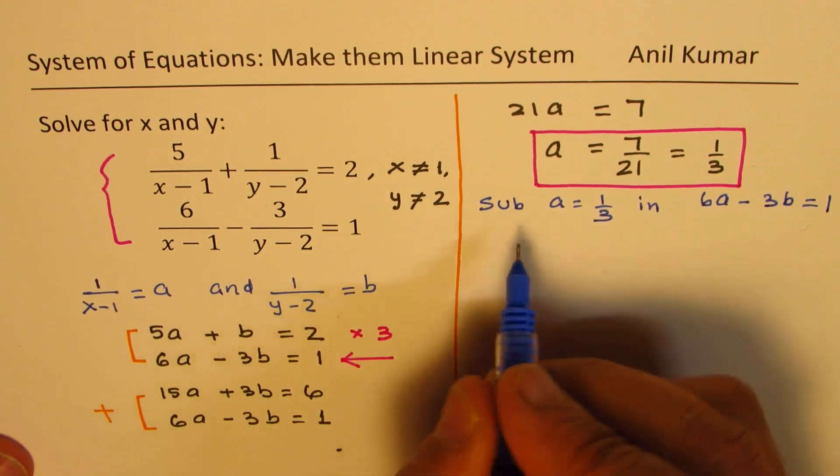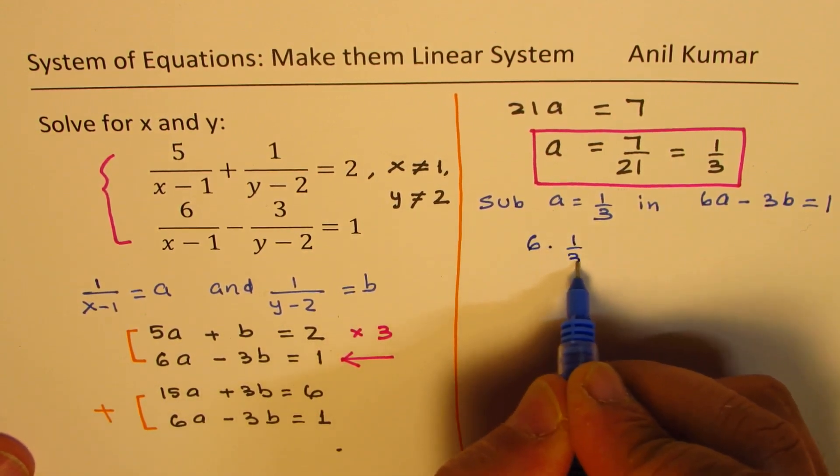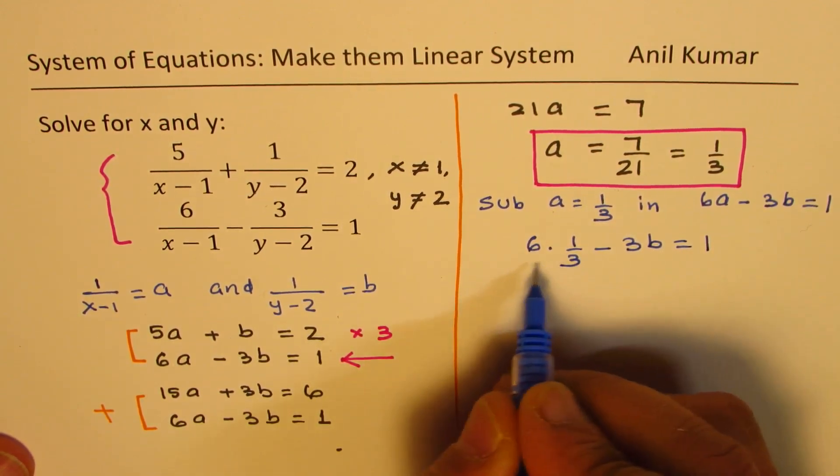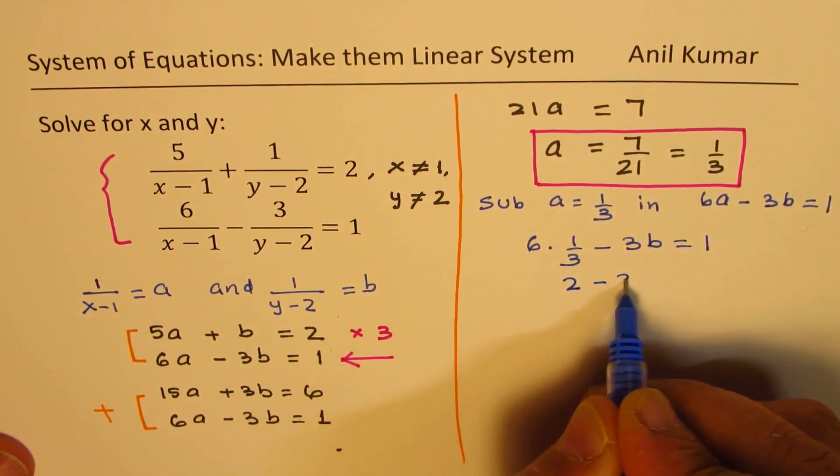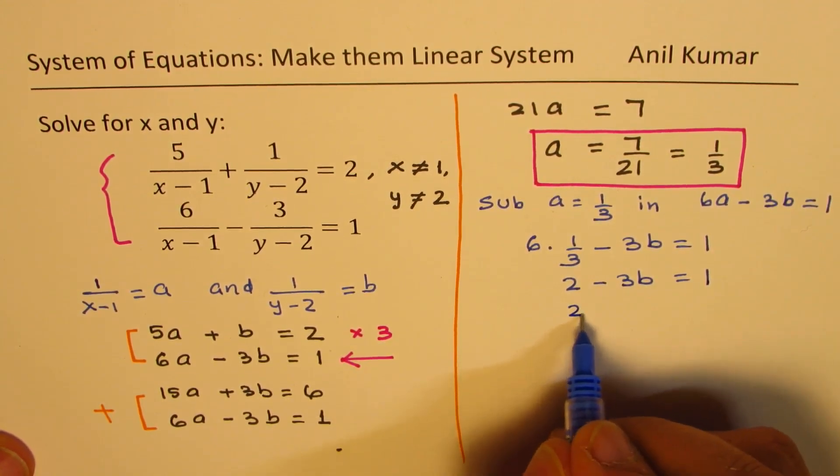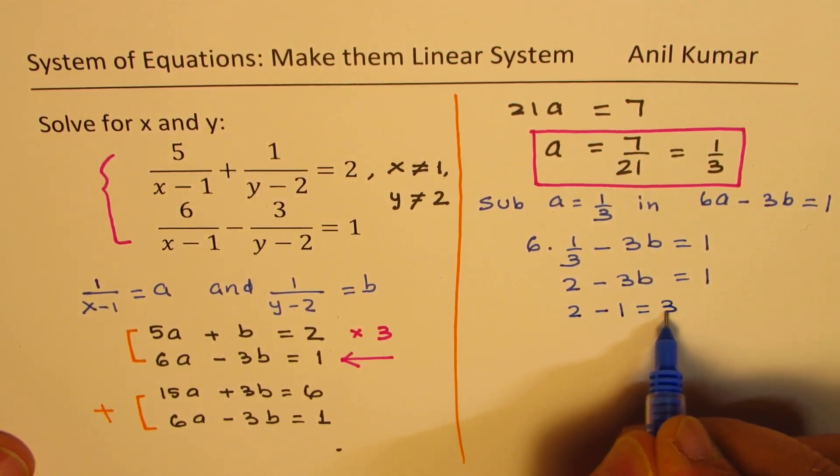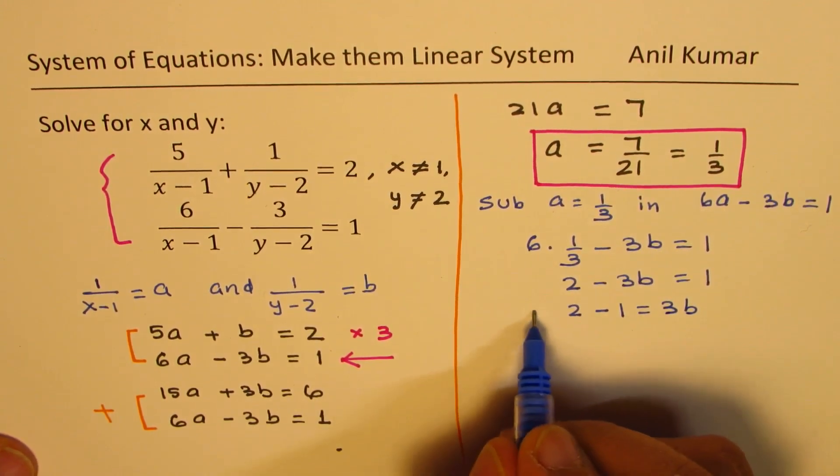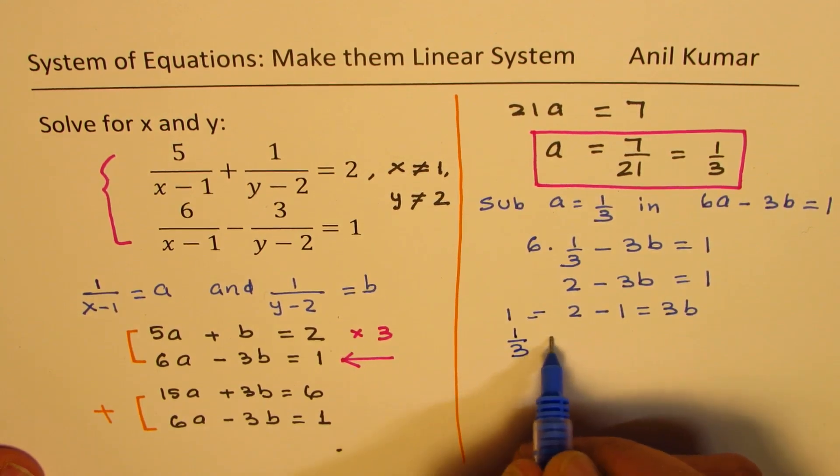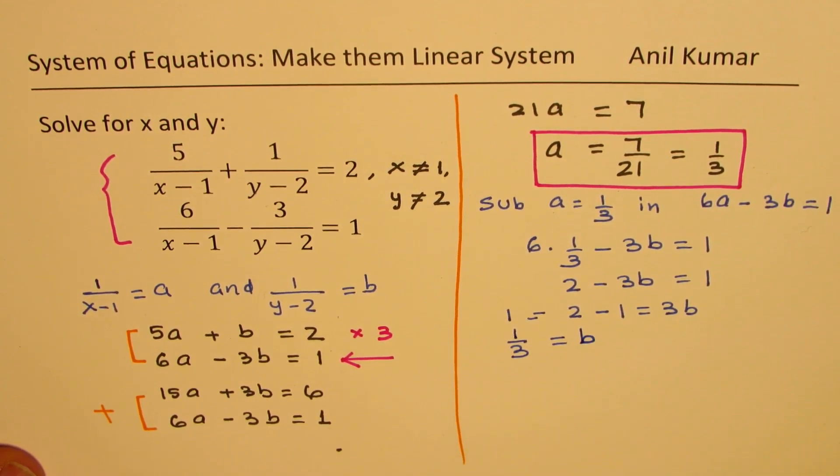So when I write a as 1 over 3, I get 6 times 1 over 3 minus 3b equals 1. Now that is 2 minus 3b equals 1. Or we could write this as 2 minus 1 equals 3b. So which is equal to 1. Or we can write here that 1 over 3 is equal to b. So we get the value of b as also 1 over 3.